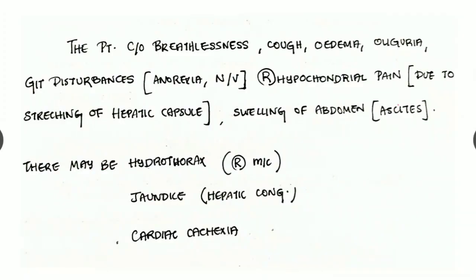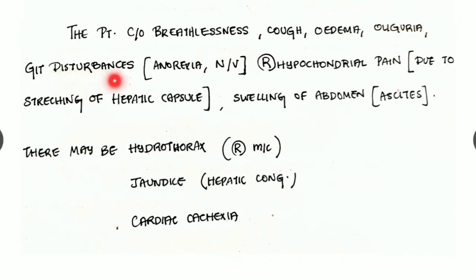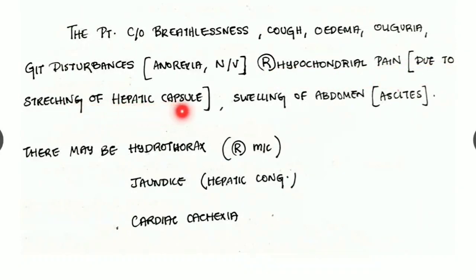If a patient complains of breathlessness, pedal edema, oliguria, GI disturbances like anorexia, nausea or vomiting, right hypochondrial pain — due to stretching of the hepatic capsule — or swelling of the abdomen (ascites), we must suspect heart failure. There may also be hydrothorax on the right side, jaundice due to hepatic congestion, and cardiac cachexia.